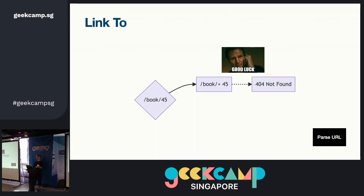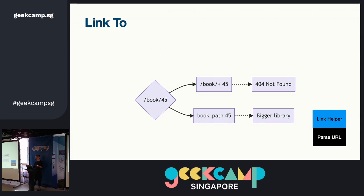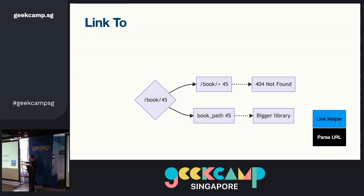Usually what we need is: hey library, do you have a path helper? I could say path 45 and you'll give me something back. So you use a router and need the path function from it. Now the library needs to support and give it to you, so the library is twice as big. And now all the path APIs are in your code base on every page.